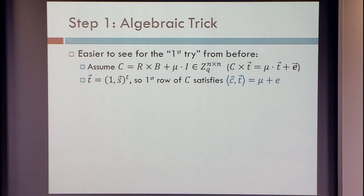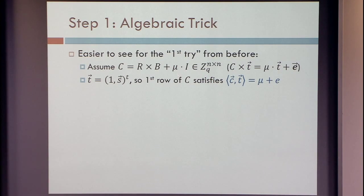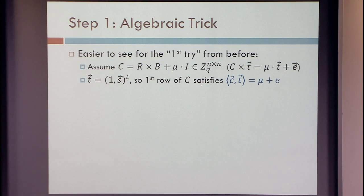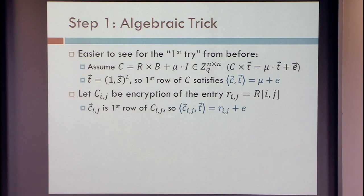Let's start with an algebraic trick. It's easier to describe this trick if we go back to our first try without the matrix G, and then see how to apply it to real GSW later. Instead of R times B plus mu times G, we're doing R times B plus mu times the identity, and we have this approximate eigenvector thing: when you multiply T by C, you get something which is mu times T plus a little bit of error. Notice that T has a 1 in the first entry, so the inner product between the first row of C and T is just your bit plus a little bit of error.